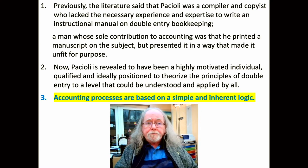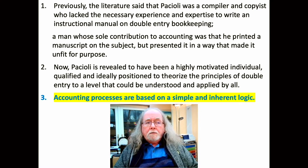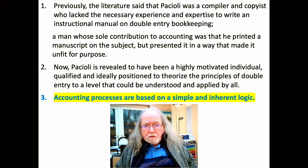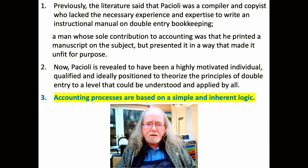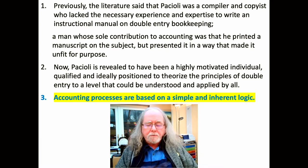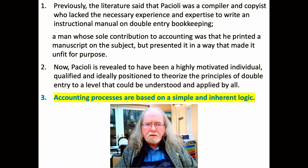Pacioli stopped that approach. Accounting processes are based on a simple and inherent logic. Double entry — debit equals credit — is the simplest algebraic equation that can exist. Everything that goes into a double entry record is recorded twice on opposite sides, and nothing else gets in unless it goes in twice on opposite sides: one debit, one credit. It's an unbreakable logic. You can prove anything in double entry. That's its basic powerful strength.